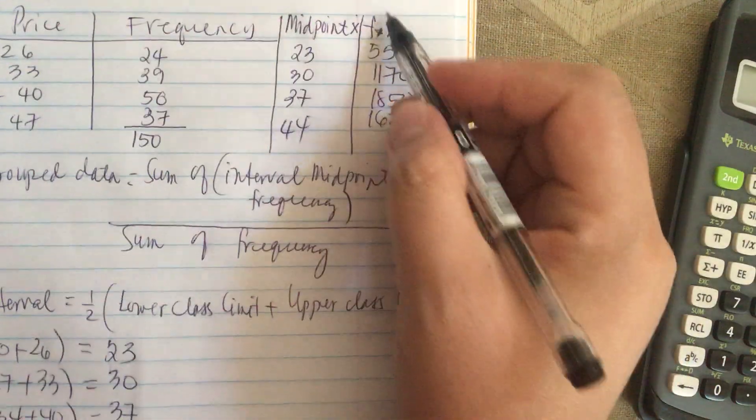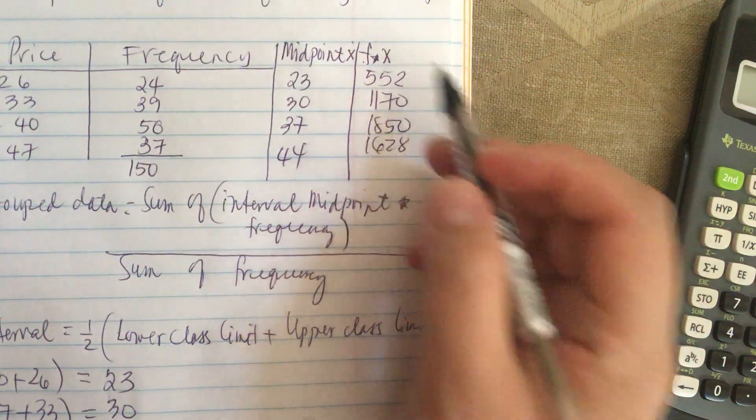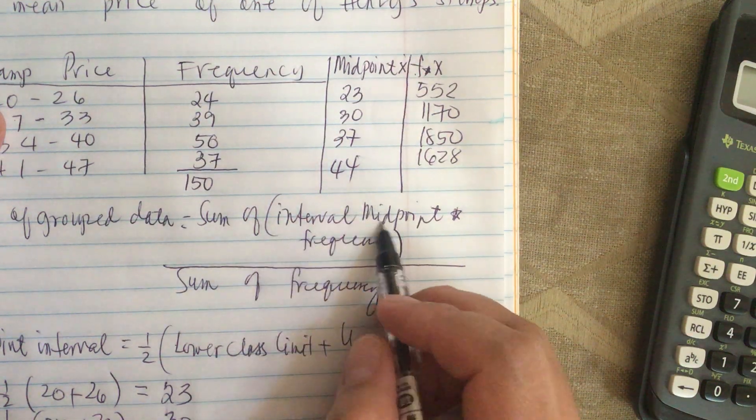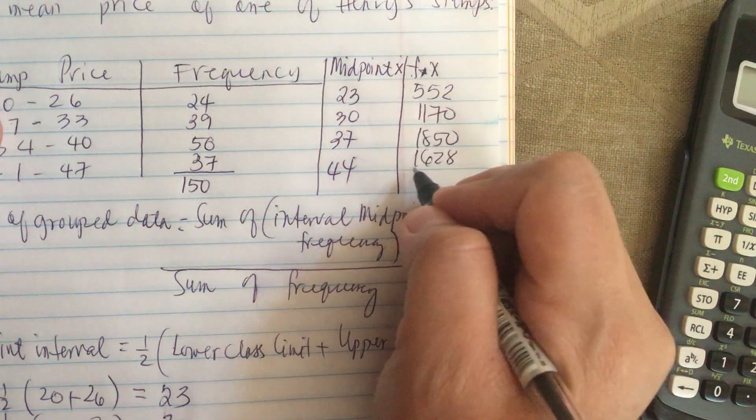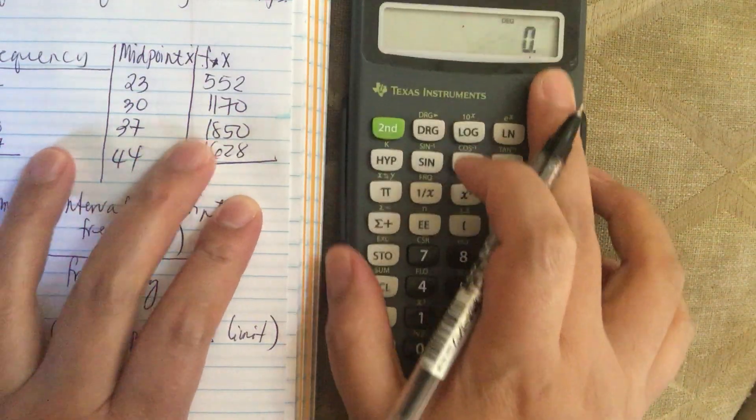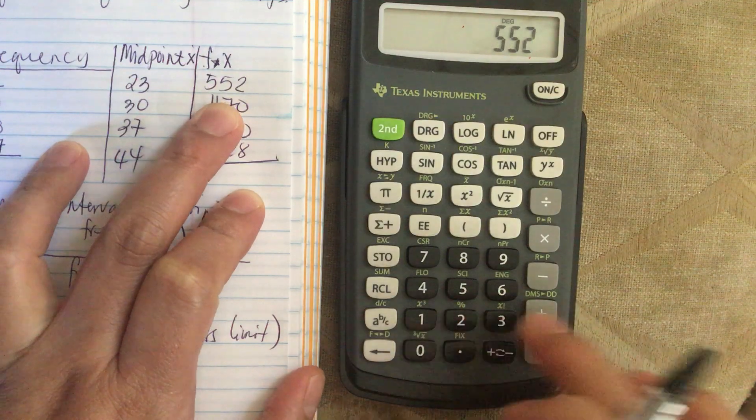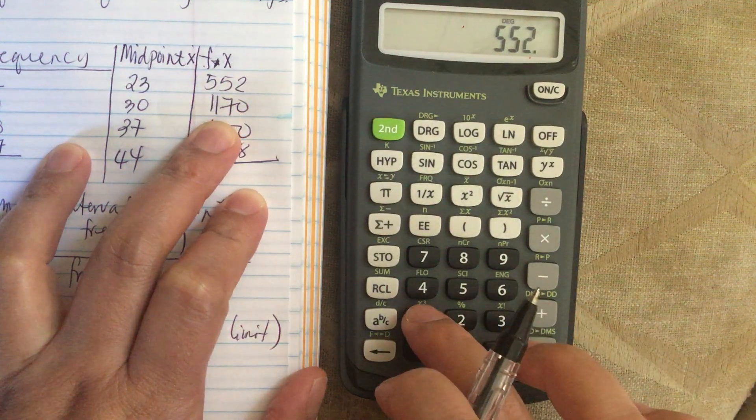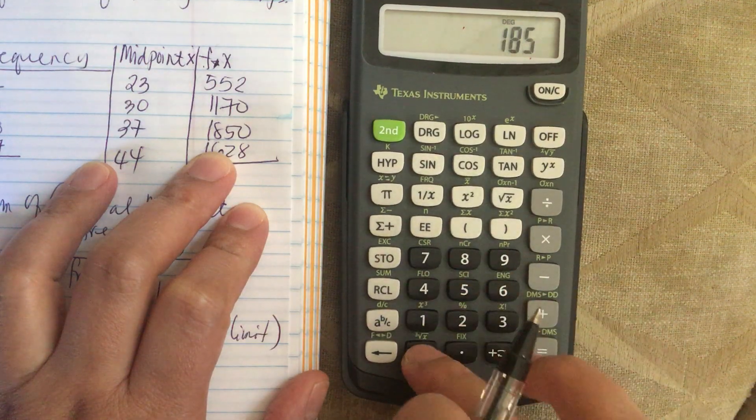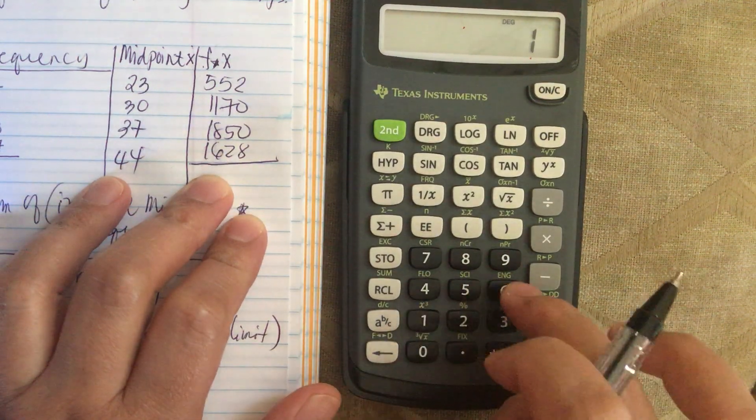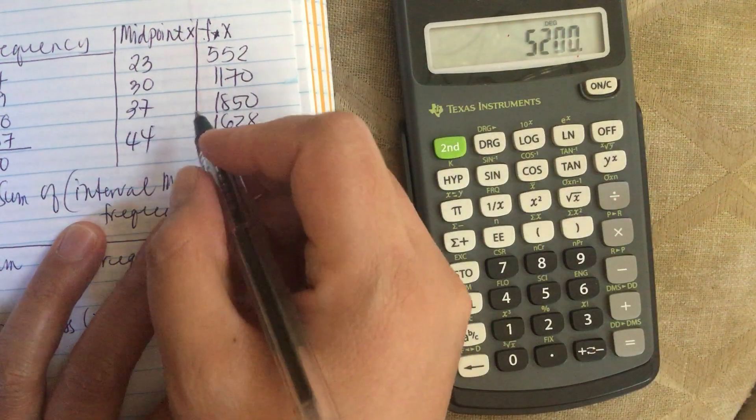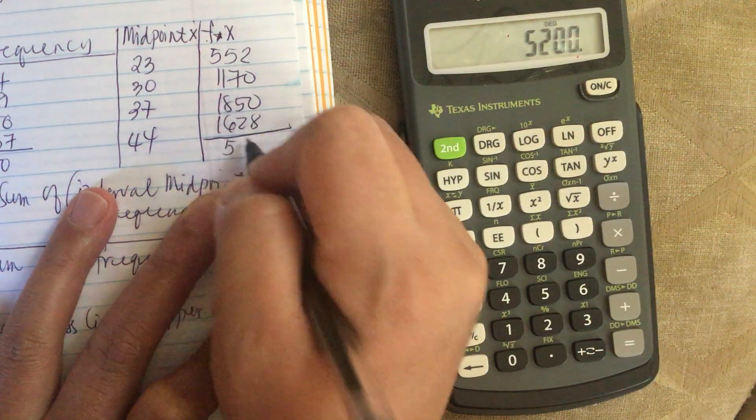Now we need this column f times x because the sum of interval midpoint times the frequency, so this is the column we sum. We have 552 plus 1170 plus 1850 plus 1628 equals 5200.